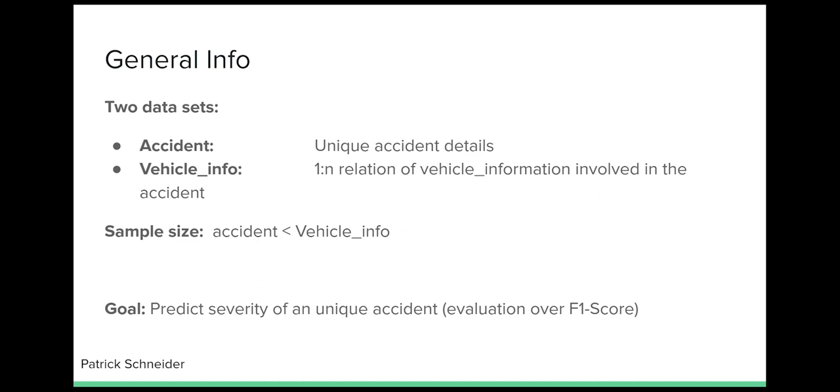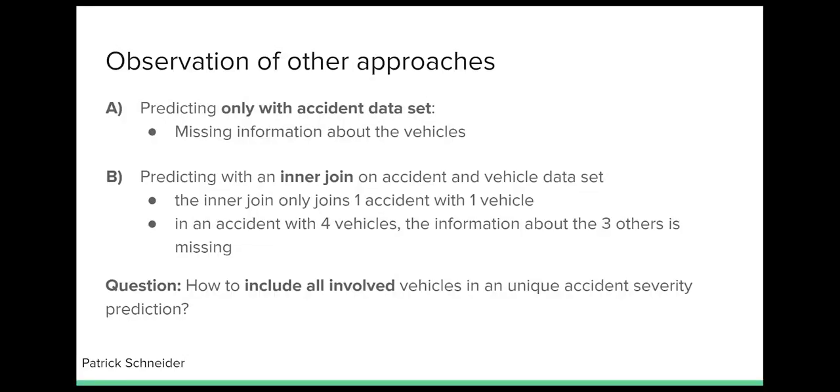I expect you to be familiar with the dataset. The database consisted of two datasets. One represented a unique accident, while the other represented a one-to-N relation of vehicle information involved in a unique accident. Most of the prediction models that I saw in the competition or online only considered the unique car accident dataset and excluded the details about the involved passengers.